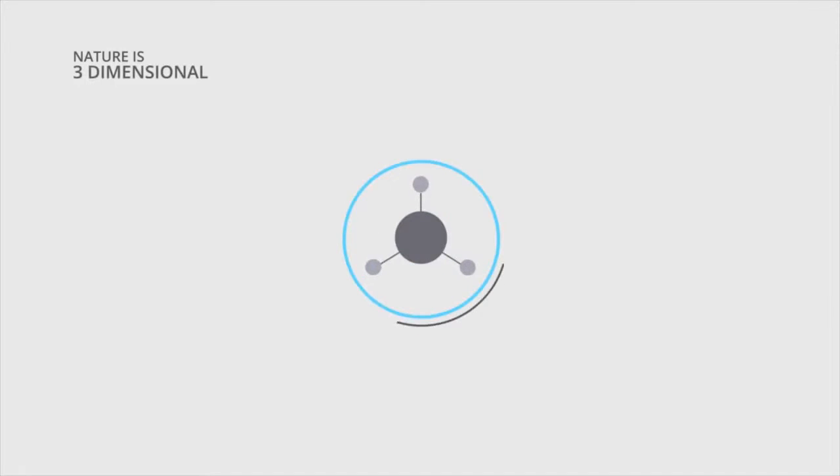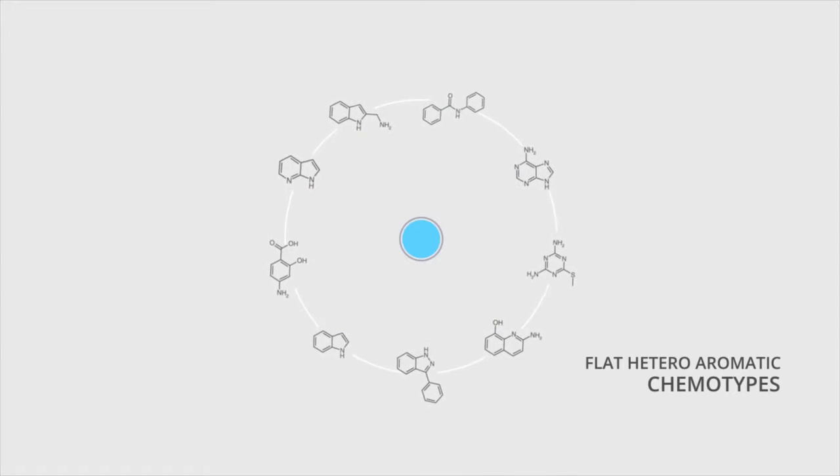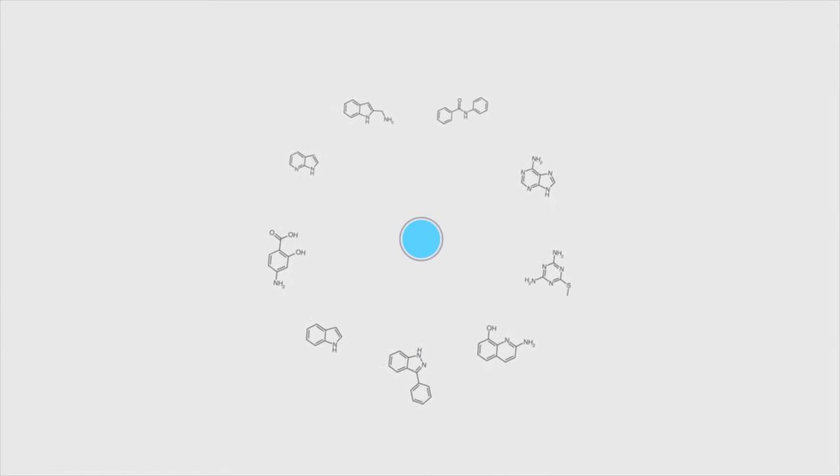But here's the problem. Nature is three-dimensional, and the majority of commercially available fragment libraries are populated with flat heteroaromatic chemotypes. The reason for this is that these structures were more detectable in NMR screening due to their well-resolved chemical shifts.